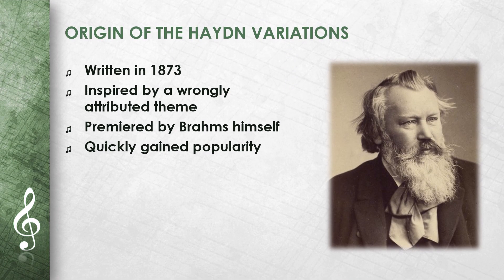The Haydn Variations were written in 1873, when Brahms was already a well-known composer. He came across a theme from an old brass chorale that was wrongly attributed to Joseph Haydn at the time. This theme inspired Brahms to write a series of variations. The premiere took place in 1873, conducted by Brahms himself, and the work quickly became popular.